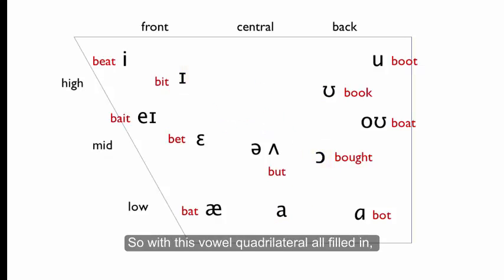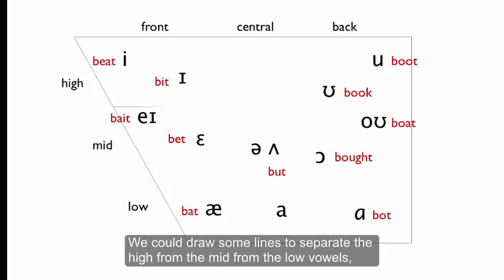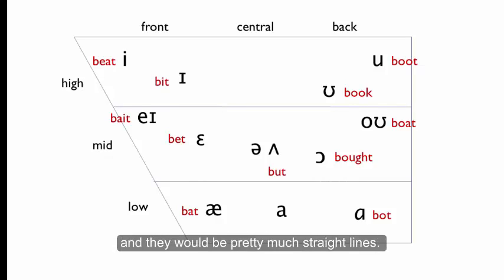So now, with this vowel quadrilateral all filled in, you can see that the chart falls into several segments. We could draw some lines to separate the high from the mid from the low vowels, and they'd be pretty much straight lines.